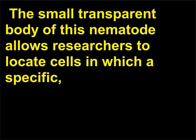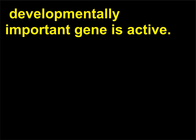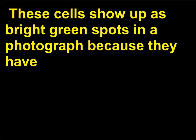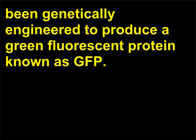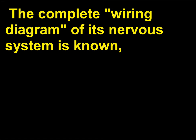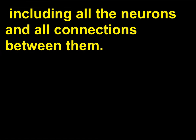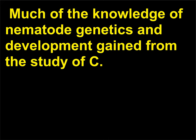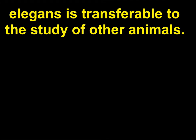The small transparent body of this nematode allows researchers to locate cells in which a specific developmentally important gene is active. These cells show up as bright green spots in a photograph because they have been genetically engineered to produce a green fluorescent protein known as GFP. The complete wiring diagram of its nervous system is known, including all the neurons and all connections between them. Much of the knowledge of nematode genetics and development gained from the study of C. elegans is transferable to the study of other animals.